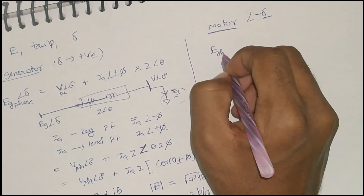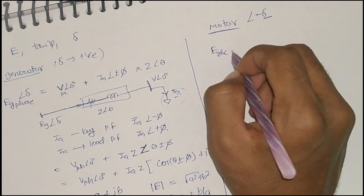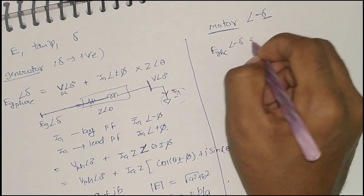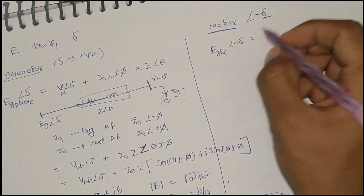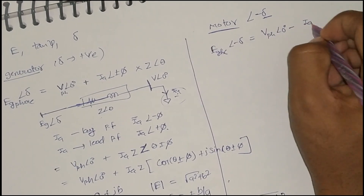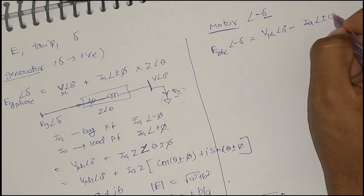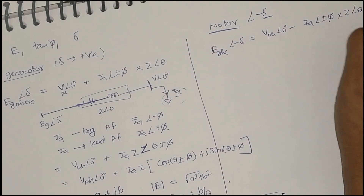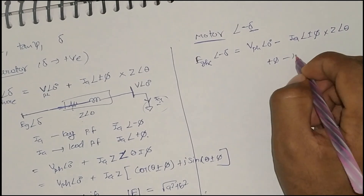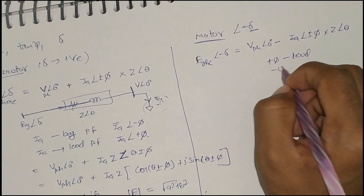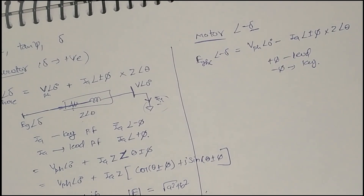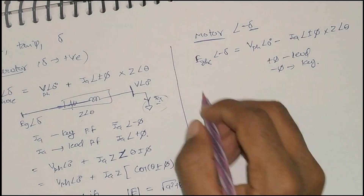Now for the motor: the generated voltage E at angle minus delta per phase equals V_phase at angle zero degrees minus I_a at angle plus or minus phi, into Z at angle theta. Plus phi for leading load and minus phi for lagging load.